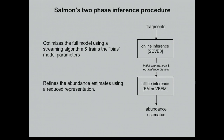That's the likelihood model. The next step is the inference procedure for actually finding the parameters that maximize it. Salmon uses a two-phase inference procedure: the first phase is an online inference procedure where reads stream through the program — which is where the name Salmon comes from, because salmon swim upstream — and then an offline inference phase that refines the initial results.